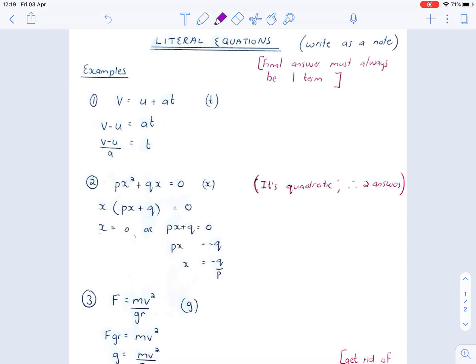The first example: v equals u plus at, and we need to solve for t. When we need to solve for t, the unknown can be on the right or the left hand side, it doesn't matter. So we're going to leave it on the right hand side. We take the u across to the other side and it becomes v minus u. Then we just need to get rid of the a, so we divide by the a. The answer is t equals v minus u over a.